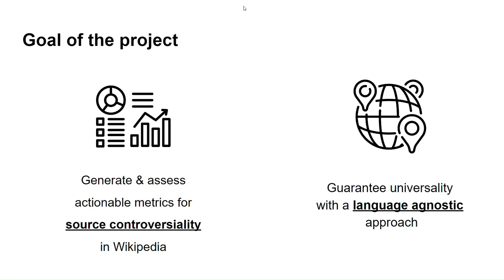We want to do so using a language-agnostic approach, meaning that we cannot read inside the source but can only rely on editors' behavior. In this way, we can also apply our metrics to all languages, especially low-resource ones, thus improving knowledge equity.